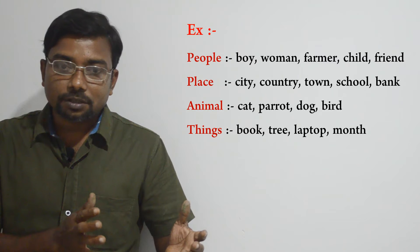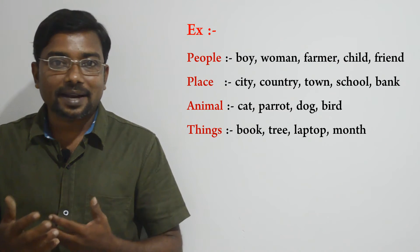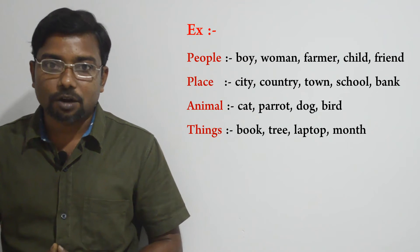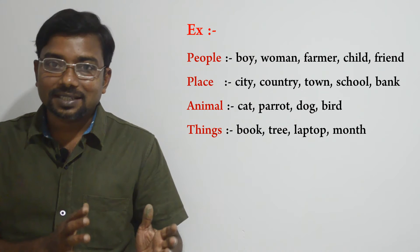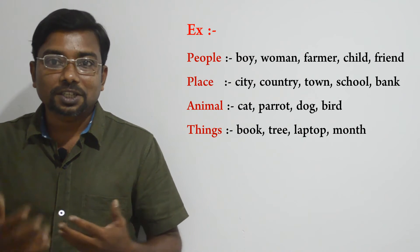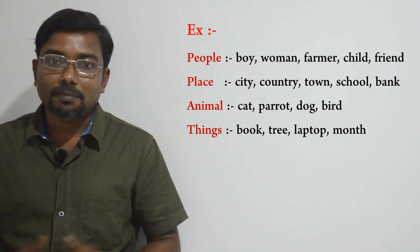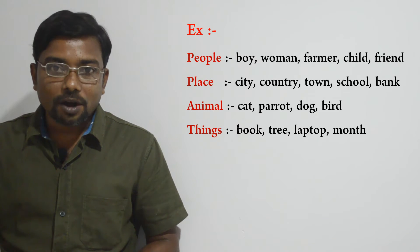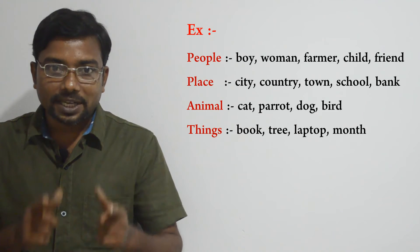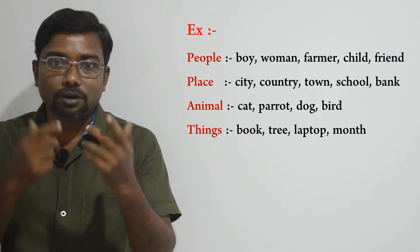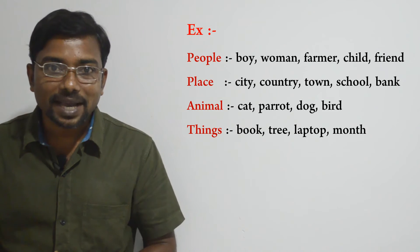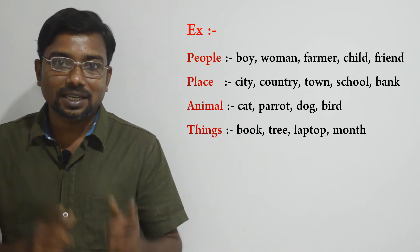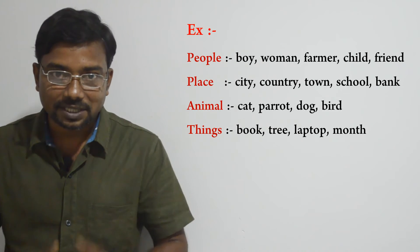When we talk about animals, cat, parrot, dog, bird are common nouns. For things: book, tree, laptop, month, year — these are common nouns. When we look at all these examples, they are common nouns because we cannot identify specific people, place, animal or things from these examples.